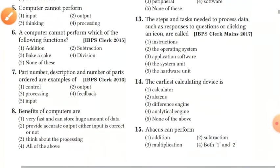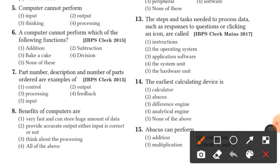Question 6: a computer cannot perform which of the following functions? The options are addition, subtraction, bake and cake, division, and none of these. The right answer is bake and cake — a computer cannot bake a cake. Addition, subtraction, and division it can do.